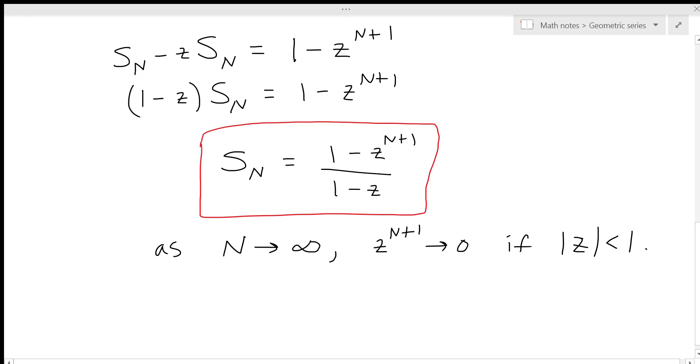So this means that as n goes to infinity, as a consequence of this, S_N approaches a value S equal to 1 divided by 1 minus z if the absolute value of z is less than 1.